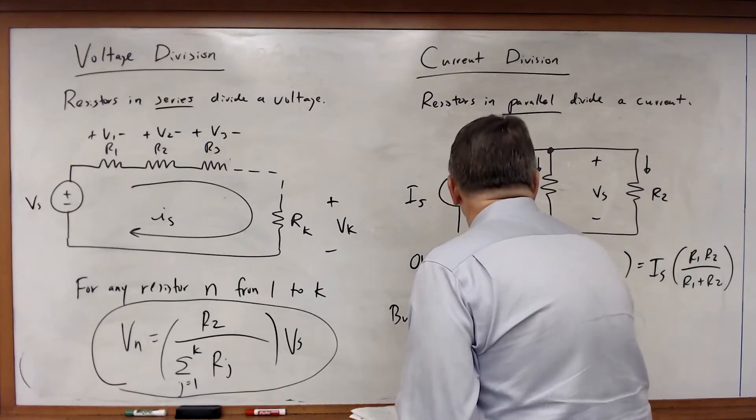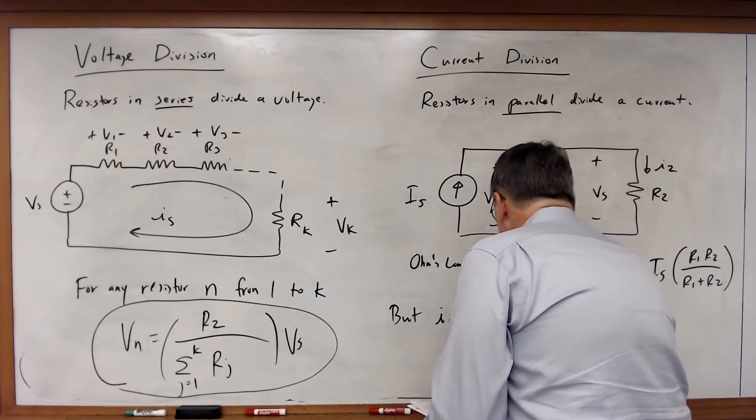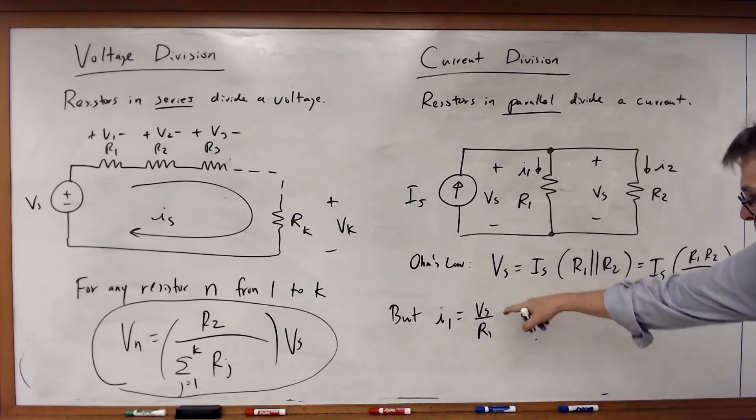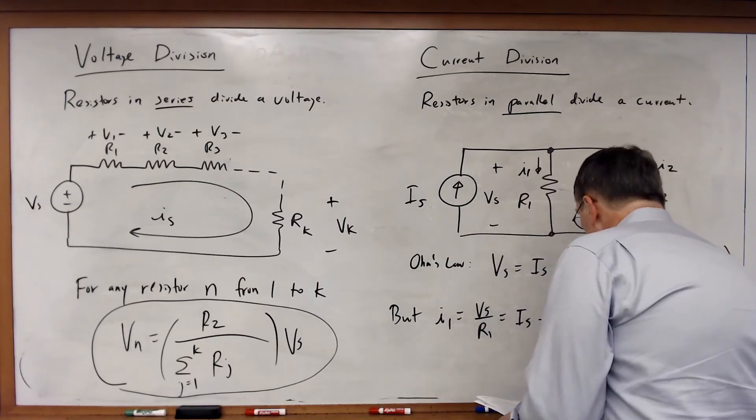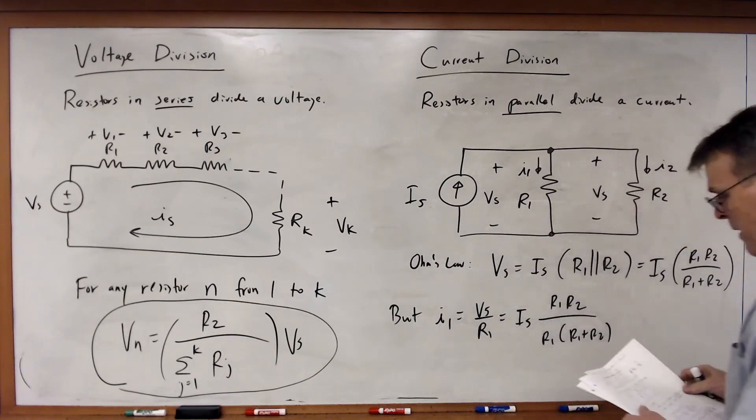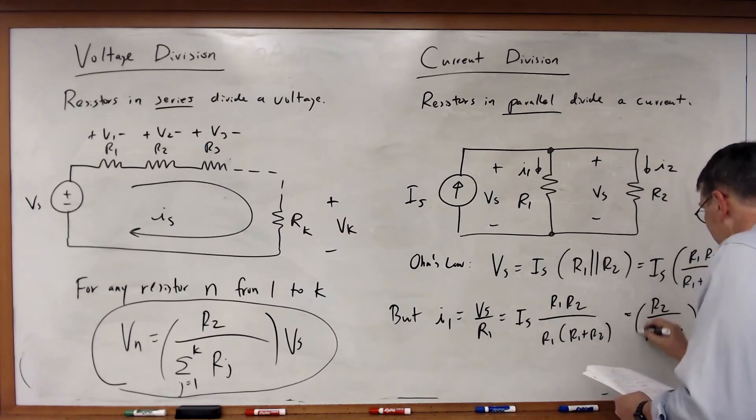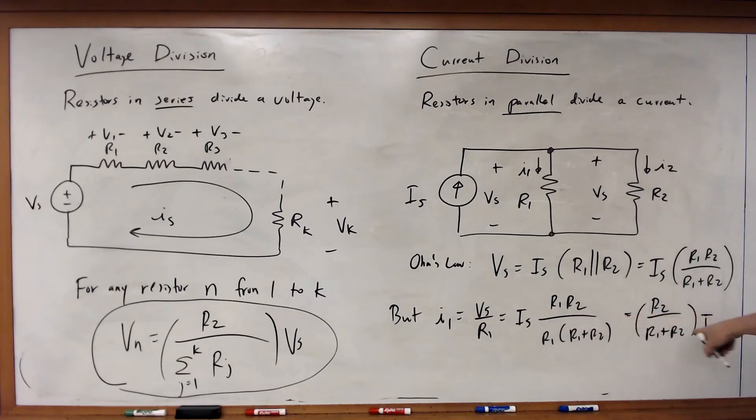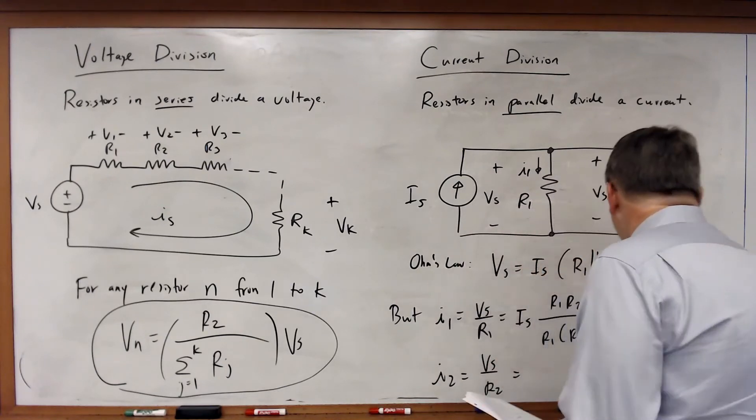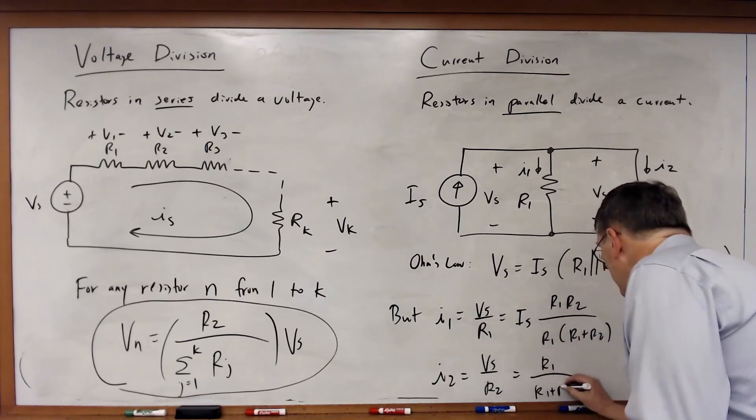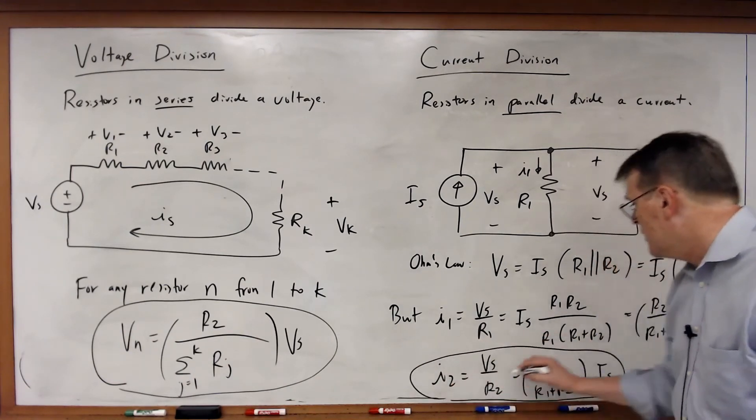Along the same lines, we know I1 will be equal to VS over R1. I can substitute VS and what I'll get is IS times R1 R2 over R1 times R1 plus R2, which will just be equal to R2 over R1 plus R2 times IS. And so here we see the principle of current division.